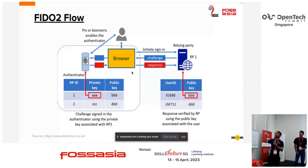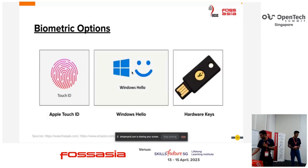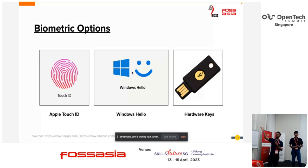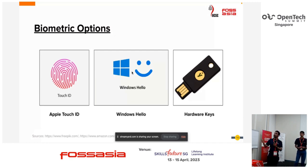There is a detailed flow diagram of how FIDO works. We don't have much time to go through it all, but feel free to grab a photo or ask me — I'm available for a few more hours. For authenticator examples: internal ones include Touch ID, Face ID, and Windows Hello; external ones include security keys like YubiKey where you put your fingerprint to authenticate.